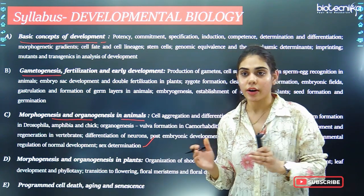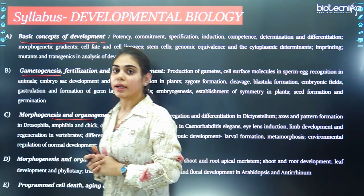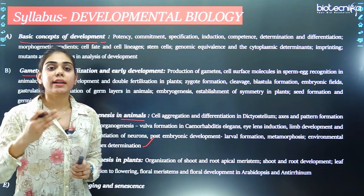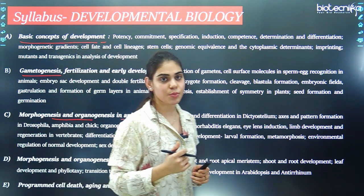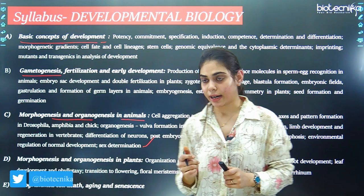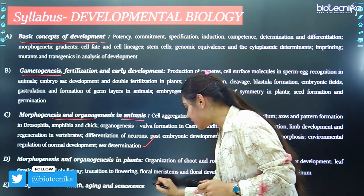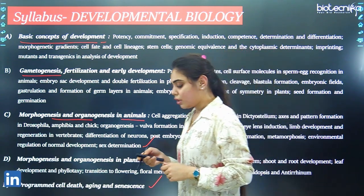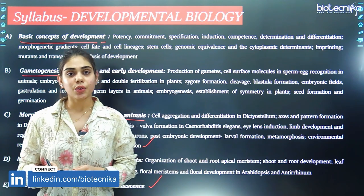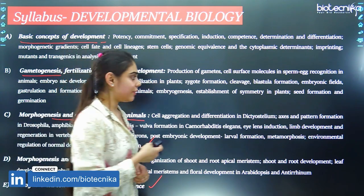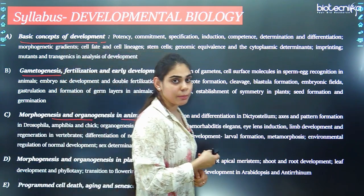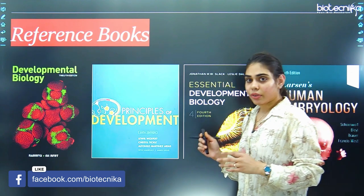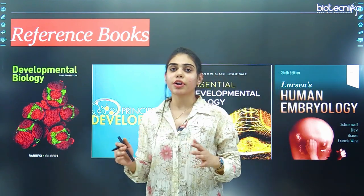The fourth topic is morphogenesis and organogenesis in plants. Here we learn about the model organism Arabidopsis and also about phyllotaxis. The last sub-part is programmed cell death (PCD), aging, and senescence. This is the complete syllabus for Unit 5, that is Developmental Biology.